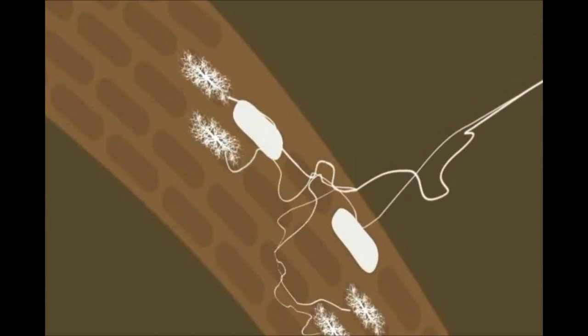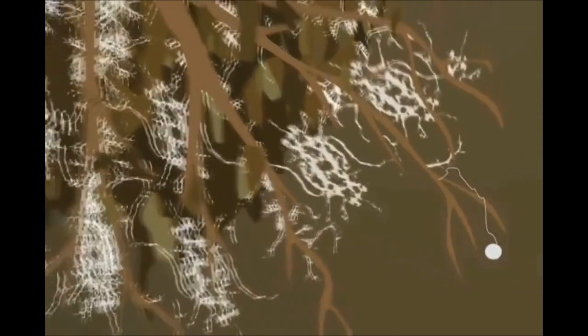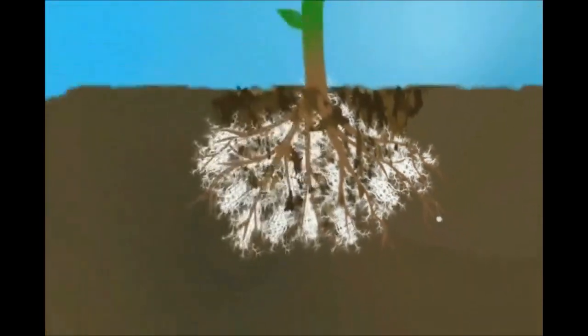Mycorrhizae form structures where both the plant and the beneficial fungus can exchange food and energy. These mycorrhizal filaments radiate out into the surrounding soil and form an elaborate web of tiny absorbent threads.